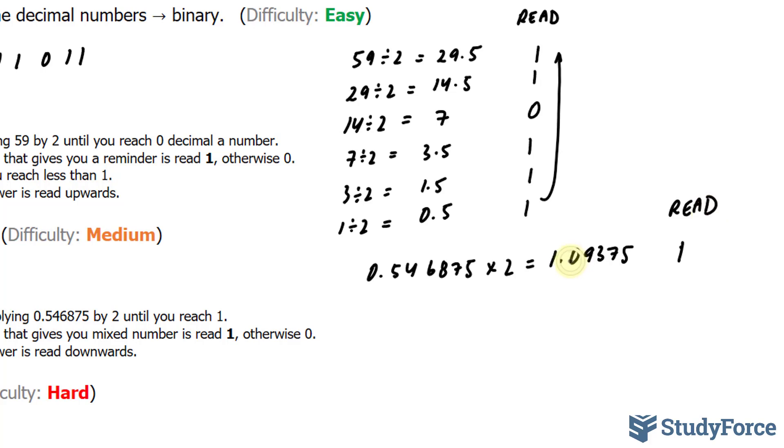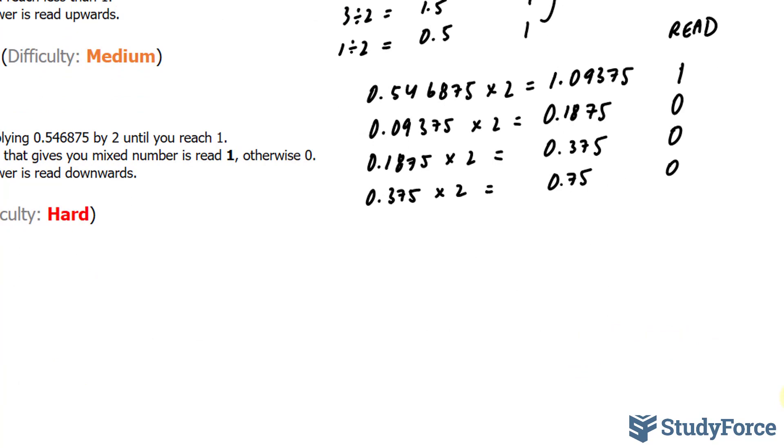Next, what I'll do is take only the decimal part of the number, everything after that decimal, and multiply that by 2. If I multiply this by 2, I end up with 0.1875. And that is read as 0 because there's no whole number along with the fraction part. I'll take 0.1875 and multiply that by 2. If I do that, I end up with 0.375. There's no whole number, that's read as 0. I'll take 0.375 and multiply that by 2. And I end up with 0.75, another 0. And you'll continue doing this until you reach 1.